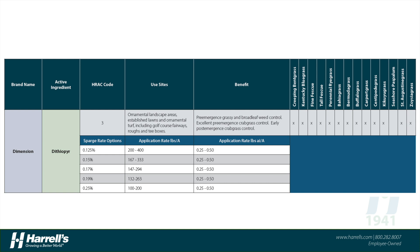The guide also lists the different use sites per the pesticide label and a general outline of the benefit each material provides. For Dimension, it offers excellent pre-emergence grassy weed control, some broadleaf weed control, and — uniquely — early post-emergence crabgrass control, giving Dithiopyr a wider application window. The guide also includes all turf species safe to apply Dimension to per the label, all sparge rate options, and the application rate ranges to achieve labeled rates.